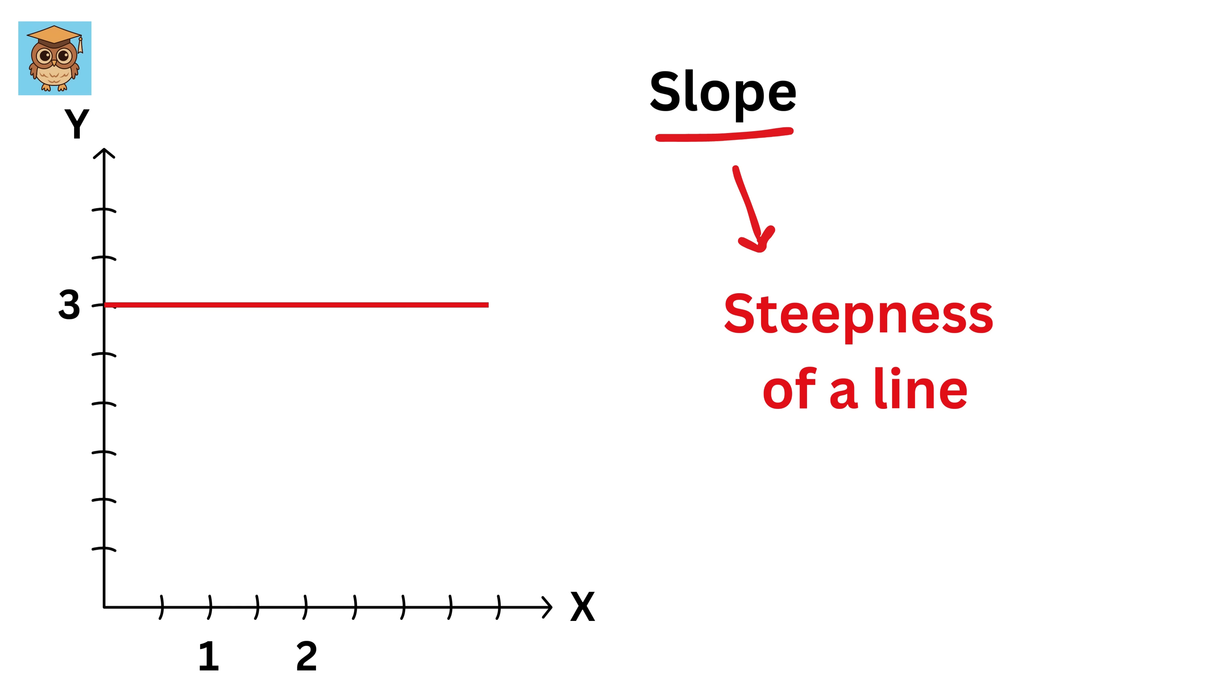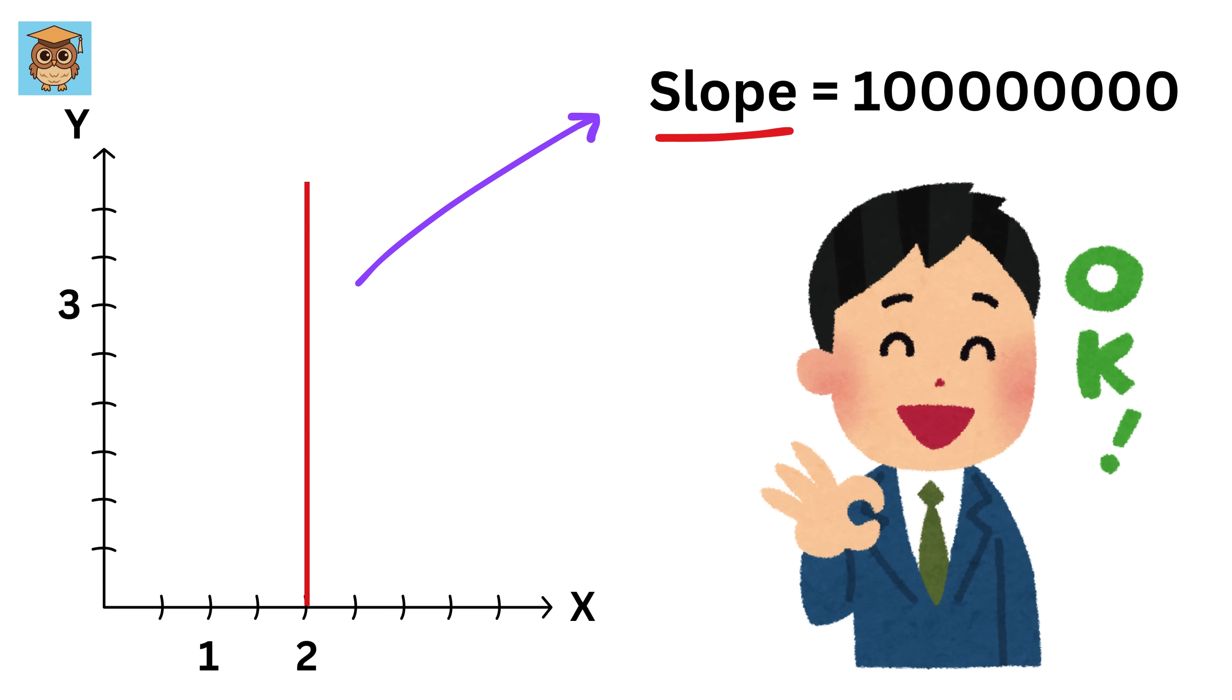Now, imagine a situation where the slope is 0. For instance, if you have a line like y equals 3, a horizontal line, then we know that the slope of this line is 0, because y doesn't change at all, no matter how much x changes. On the other hand, if the slope is a very large number, the line is super steep, almost vertical. I think you understood my point.